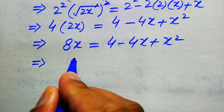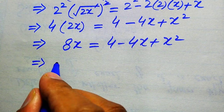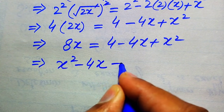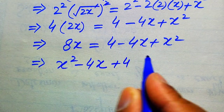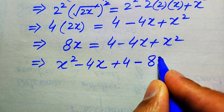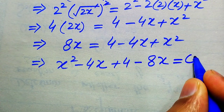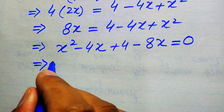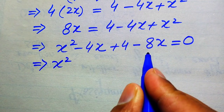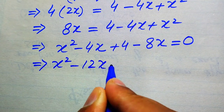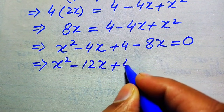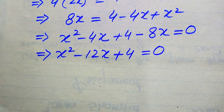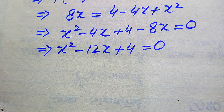We move 8x from the left-hand side to the right-hand side, giving: x² minus 4x plus 4 minus 8x equals 0. Adding and subtracting like terms: minus 4x minus 8x becomes minus 12x. So the equation becomes: x² minus 12x plus 4 equals 0. This equation is now in quadratic form.